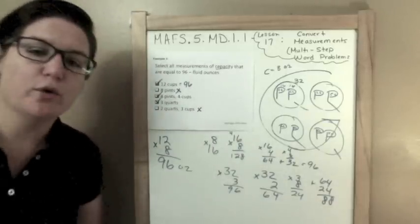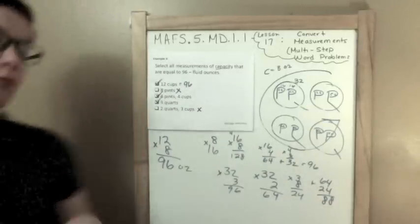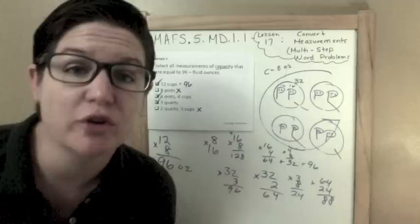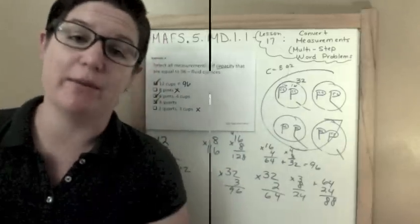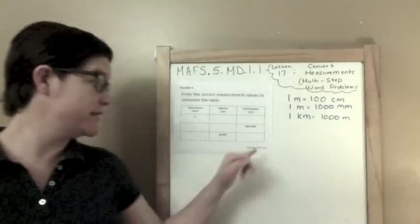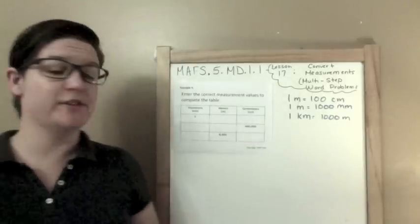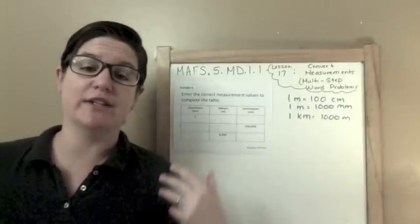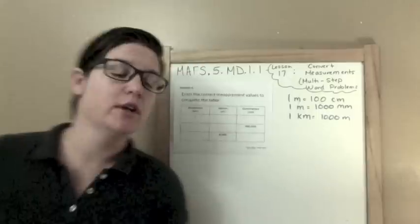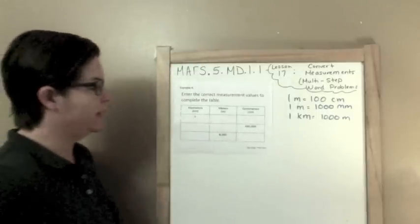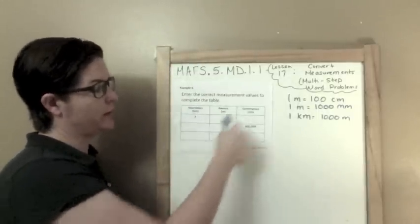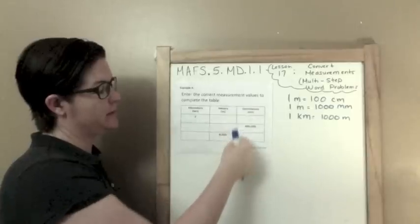Remember, for multi-select problems, you need to mark all of the correct answers in order to get that point. Alright everybody, we're on the last problem. This is example four — it's a table response, so we're just going to enter the data right into the table. It says: enter the correct measurement values to complete the table. We've got kilometers in this column, meters in this column, and centimeters in this column.